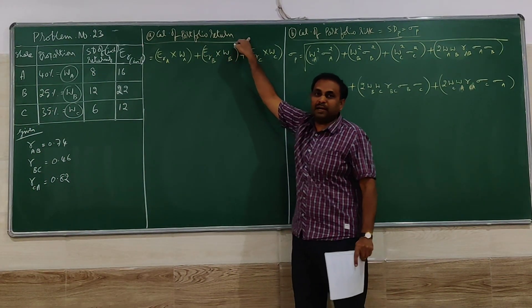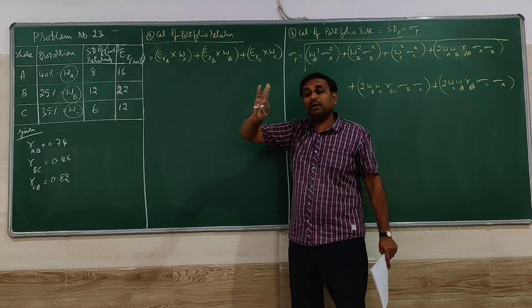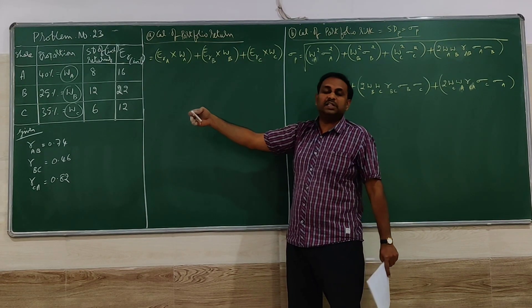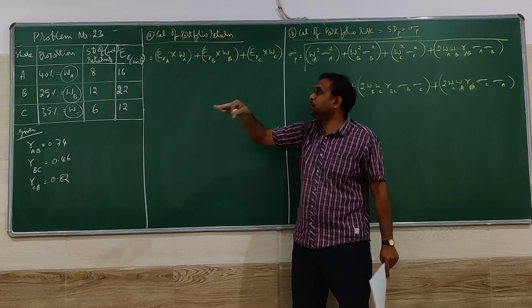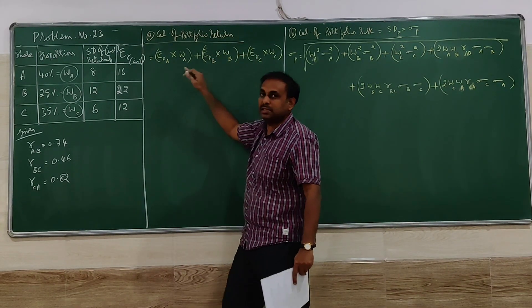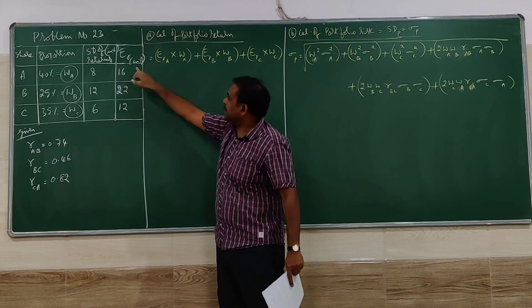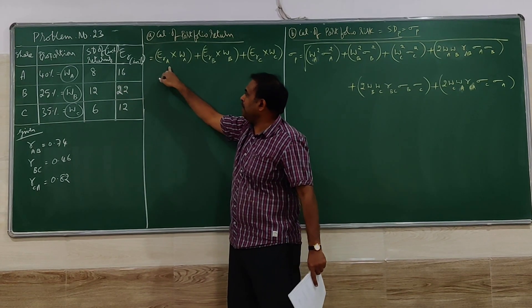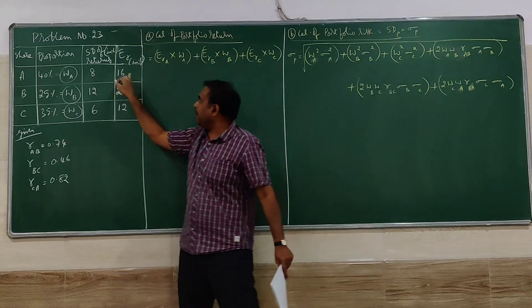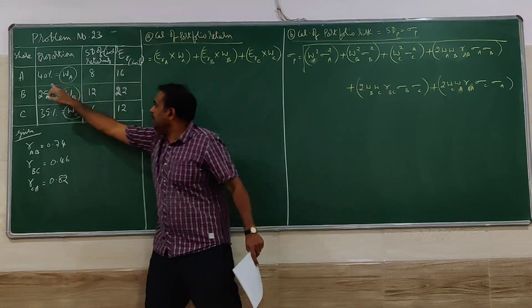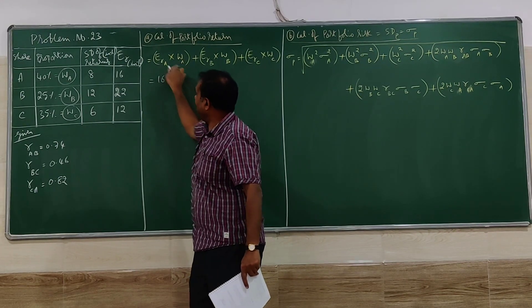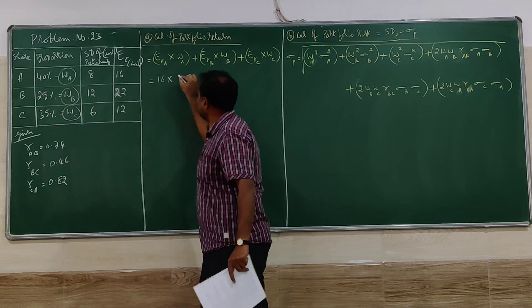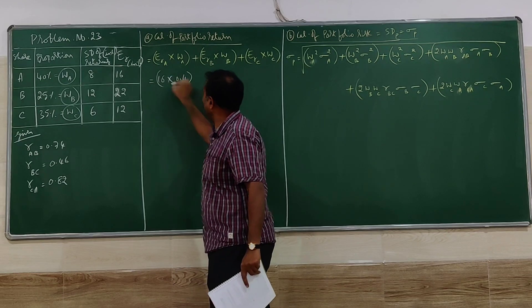They have told us to find the expected return. Expected return of three shares is portfolio return. So it is not individual one, three combinations are there. That is expected return of A into weight of A. Expected return of A is 16, weight of A is 40%, that is 0.4.